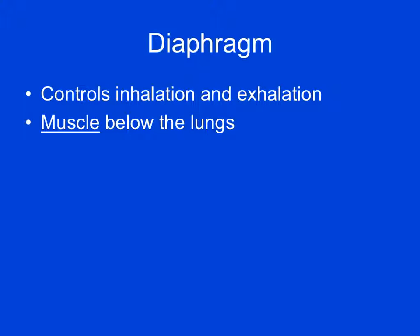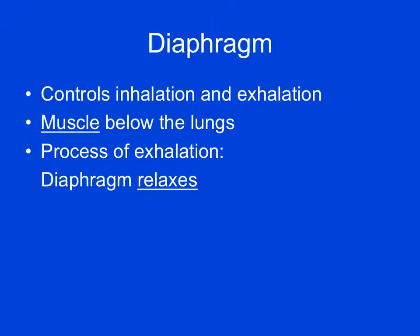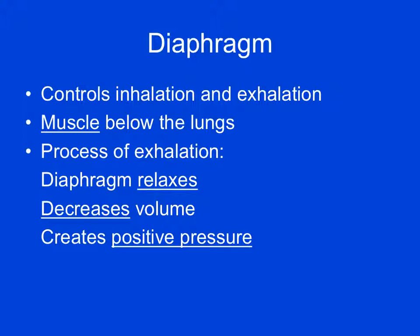How does the diaphragm control inhalation and exhalation? Let's look at exhalation first. When we exhale, the diaphragm actually relaxes. This is counterintuitive because we know we can forcefully exhale, so we tend to think of it as a contraction. But what's actually happening is you're contracting your abdominal wall muscles — not the diaphragm itself — to push air out. When the diaphragm relaxes, it moves upward in the thoracic cavity, decreasing the available volume, which creates a positive pressure that pushes the air out of the lungs.